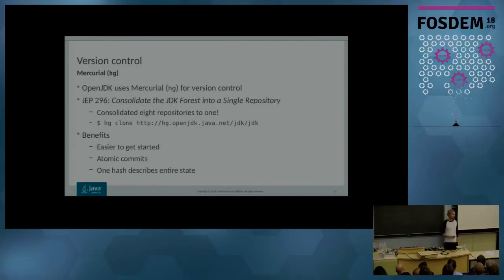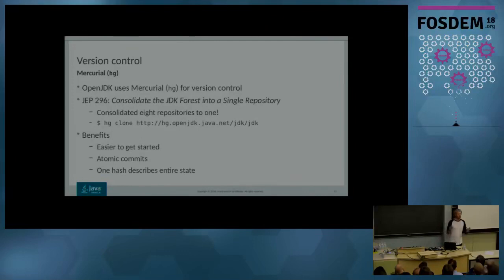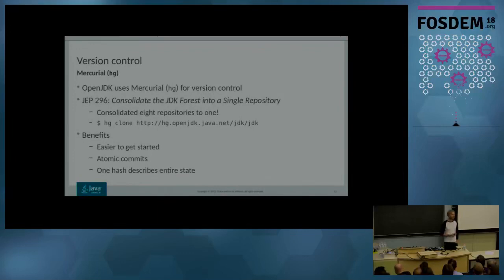The benefits here are multiple. As you can see on the slide, it's easy to get started, it's easier to wrap your head around how the repository is laid out. You get atomic commits — if I make a change in HotSpot and I make a change in the JDK, I can now commit it as one atomic commit. Previously, they were done in different repositories. We also have one hash for one given commit describing the entire state of the project at a given time, which is great. Previously, you had to describe eight different hashes if you wanted to say what your work applied to.